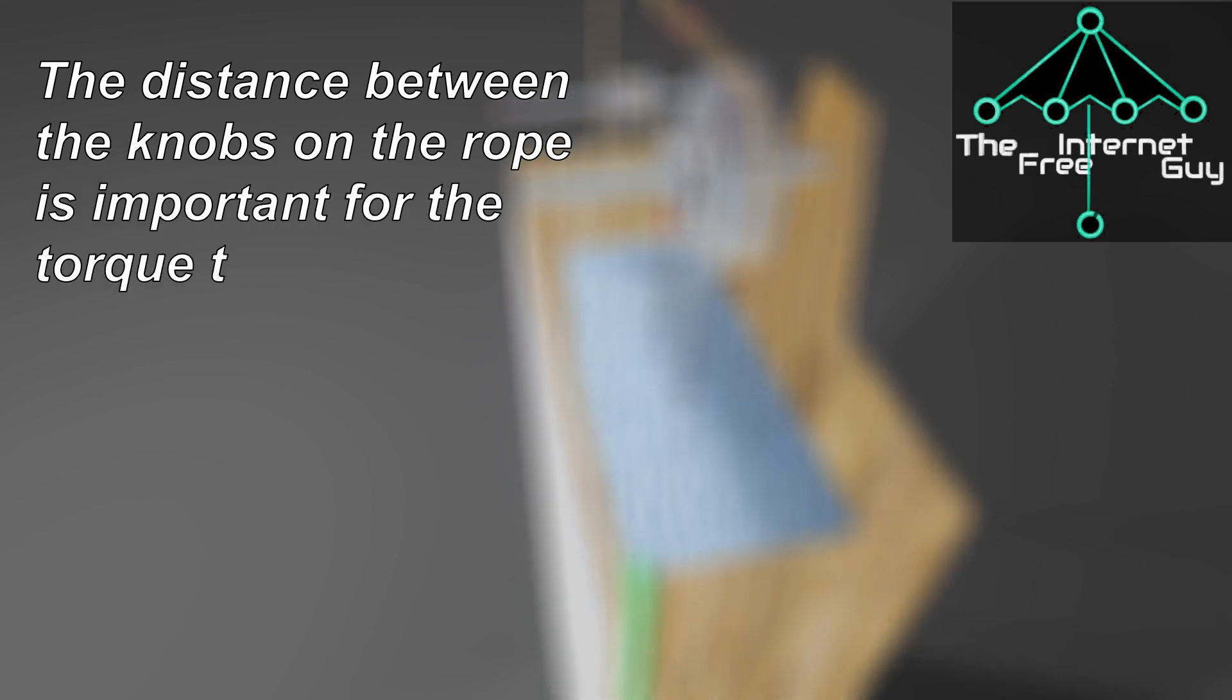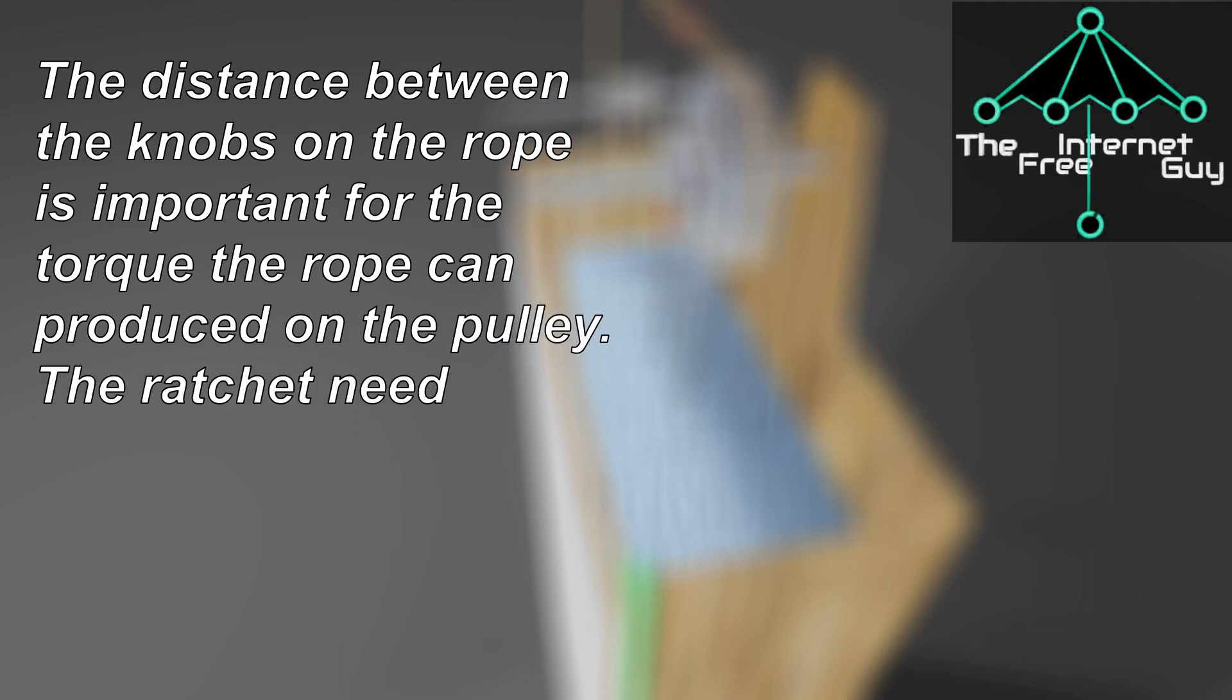The distance between the knobs on the rope is important for the torque the rope can produce. The ratchet needs to fit in between the knobs and not deform or jam due to tearing and wearing.